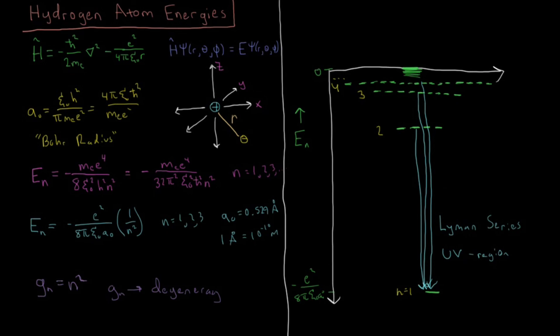If we look at the transitions from n equals 3 to n equals 2, n equals 4 to n equals 2, 5, and 6.